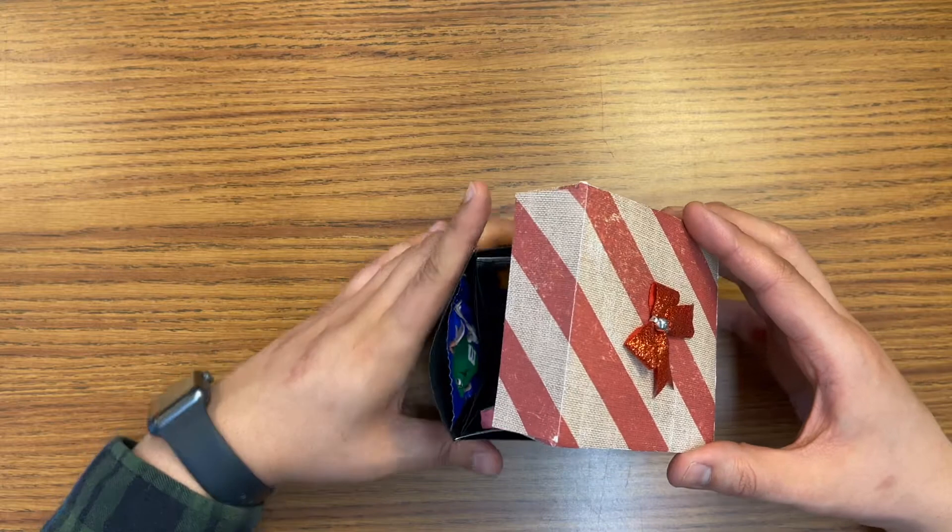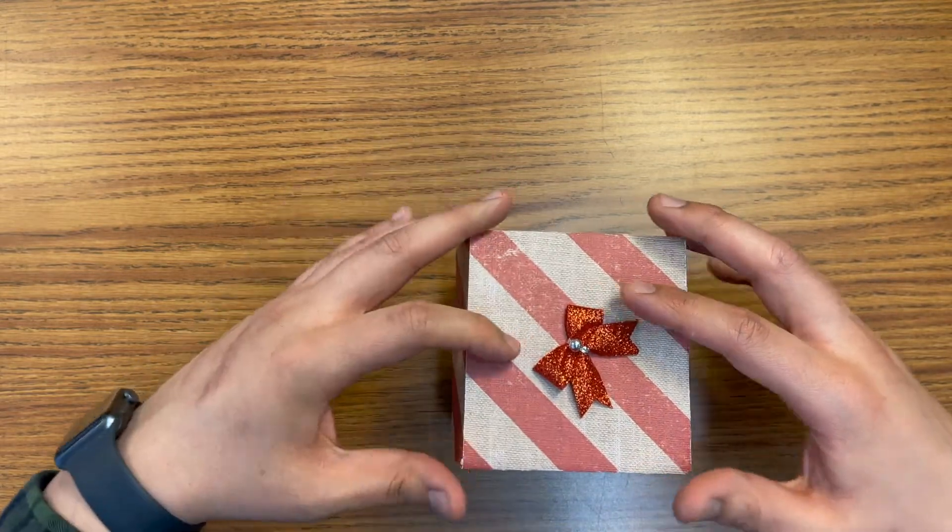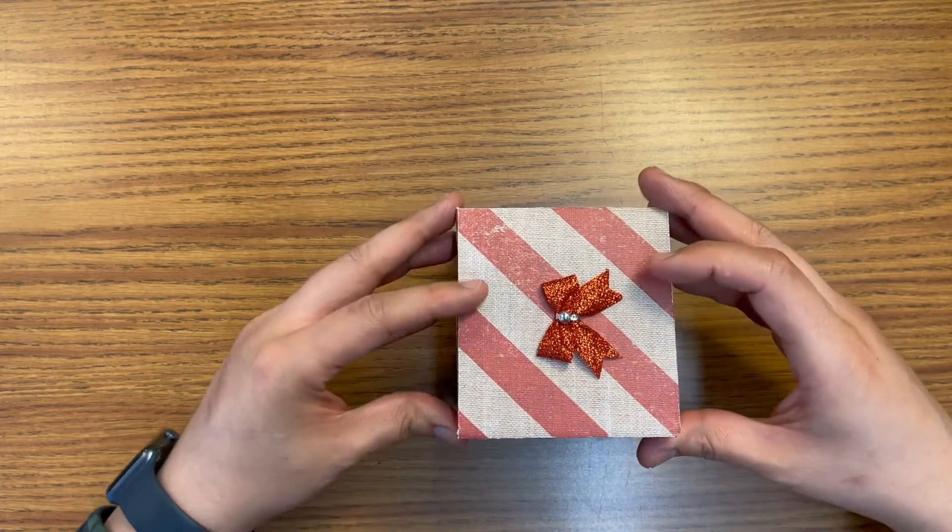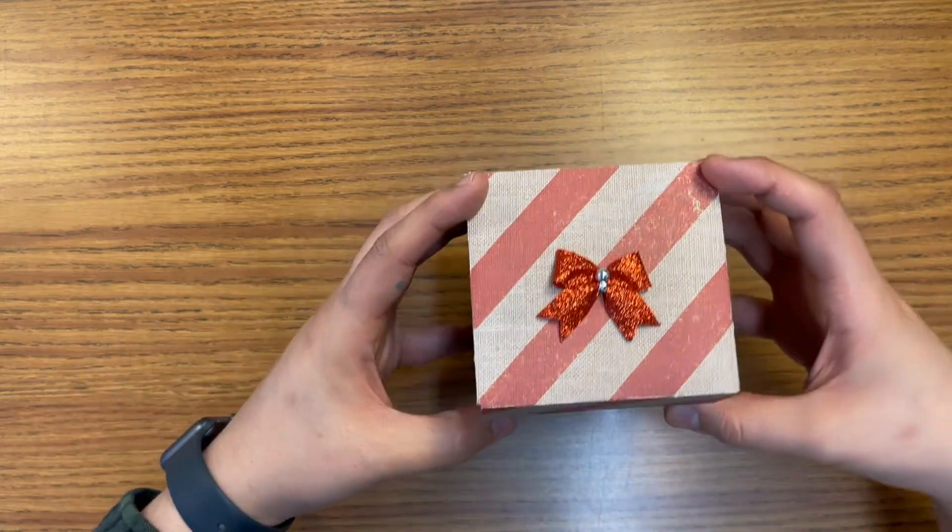You're going to go ahead and grab your lid and you're going to grab the end that fell and then you're going to just squeeze the box a little bit until the lid is able to fit on top of your box. And there you go, your explosion box.